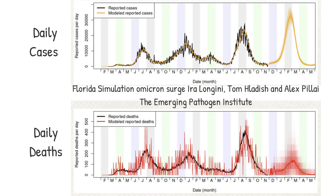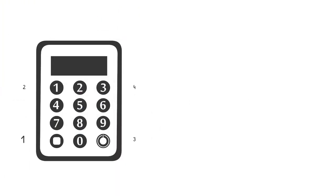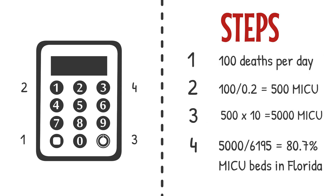How will the Omicron variant affect our health systems? Although the disease caused by this variant is estimated to be 30 to 60% less severe, simulations still predict a minimum of 100 deaths per day at the peak in Florida due to the large number of cases infected. Assuming a 20% mortality in COVID-19 cases admitted to the MICU, this predicts a daily rate of 500 new MICU cases. With an average length of stay of 10 days for critically ill COVID-19 patients, COVID-19 cases will occupy 5,000 of 6,195 — or 80% — of MICU beds in Florida at the peak. If the EPI's conservative estimate proves low, Florida's health care system could exceed capacity by several fold.